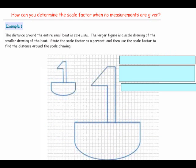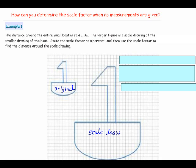In Example 1, the distance around the entire small boat is 28.4 units. The larger figure is a scale drawing of the smaller drawing of the boat. When working with scale, it's important to know which is the original and which is the scale drawing. The smaller boat is the original, and the larger boat is the scale drawing. The perimeter of the original boat is equal to 28.4 units.